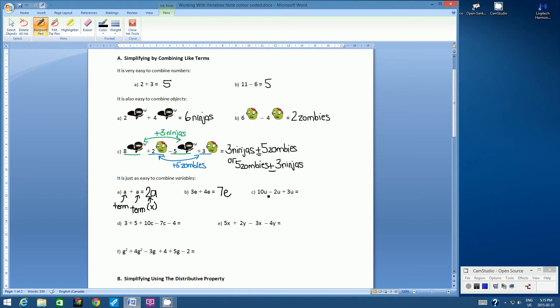All right, so let's look at the terms here. We have a u, we have a u, we have a u, and we have a u. So let's start with this part here. So 10u subtract 2u is 8u. And then we have 8u plus 3u. 8 plus 3 is 11. So this is 11u.